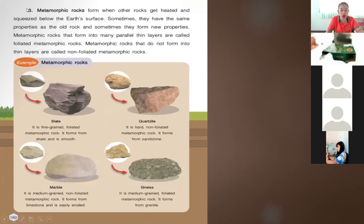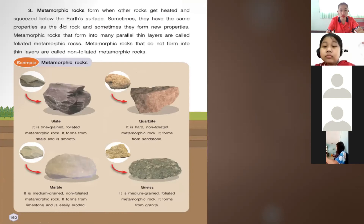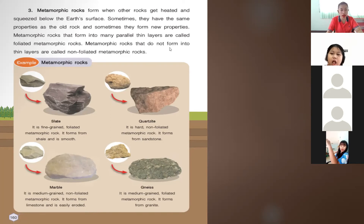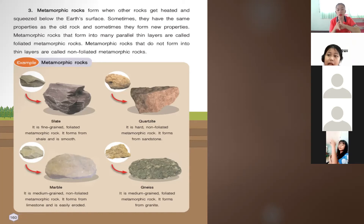Let's proceed to the third type of rock: metamorphic rocks. Metamorphic rocks form when other rocks get heated and squeezed below the earth's surface. Sometimes they have the same properties as the old rock, and sometimes they form new properties. Metamorphic rocks that form into many parallel thin layers are called foliated metamorphic rocks. Those that do not form into thin layers are called non-foliated metamorphic rocks.